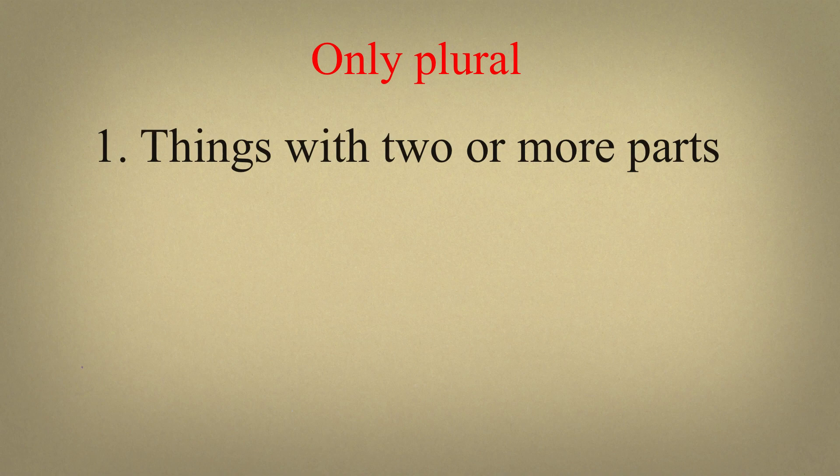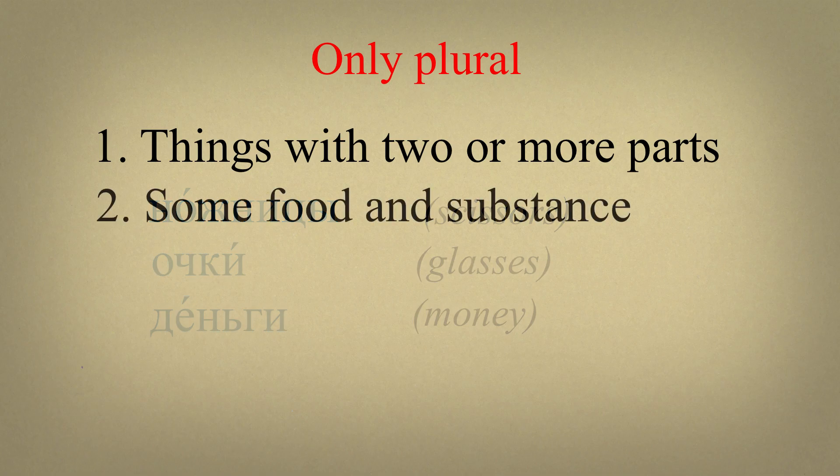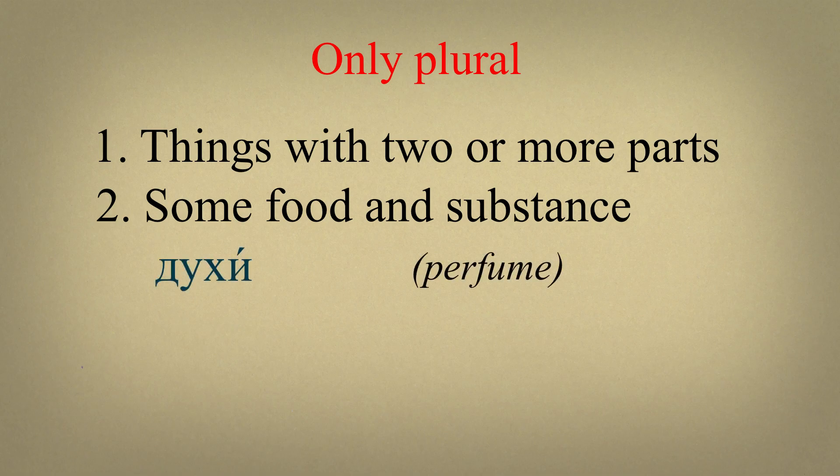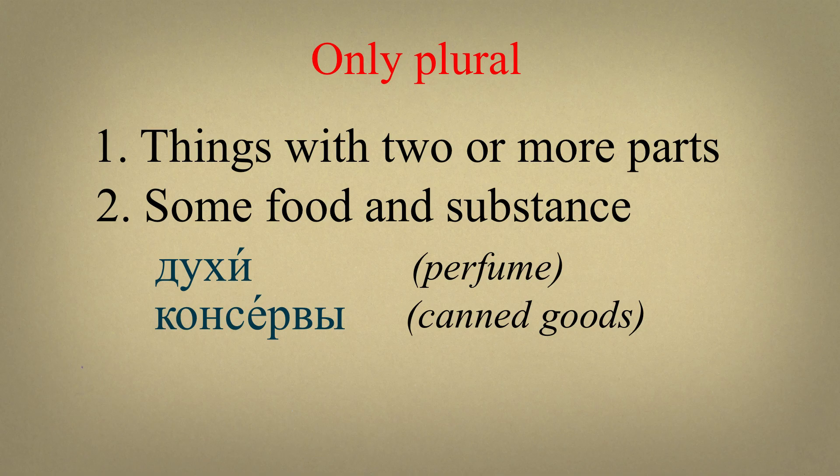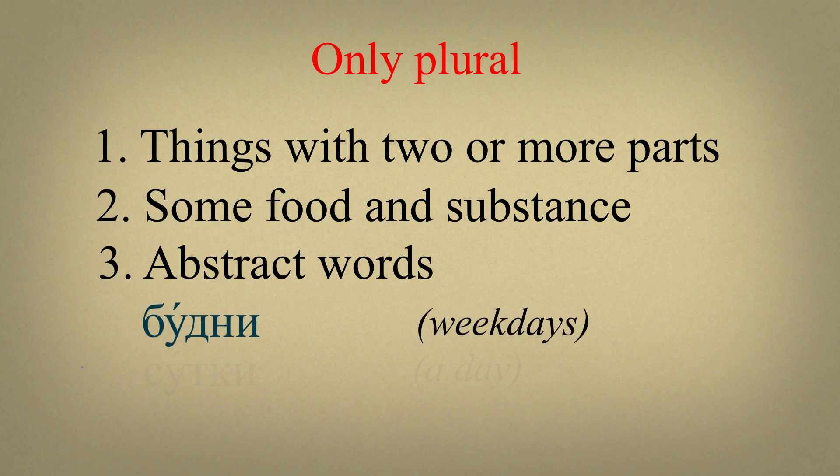Some nouns have only plural form. These words are: 1. Things which consist of two or more parts, for example ножницы, очки, деньги. 2. Some food and substance, духи, консервы. 3. Some abstract words, such as будни, сутки, каникулы.